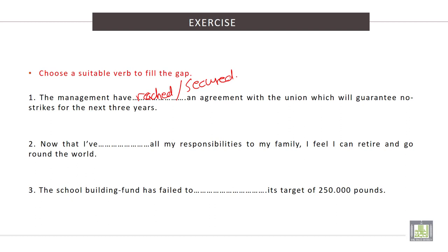Number two. Now that I have fulfilled all my responsibilities to my family, I feel I can retire and go around the world. The best verb is 'fulfilled': I have fulfilled all my responsibilities to my family.